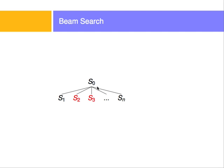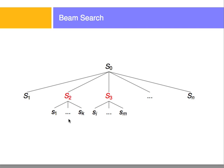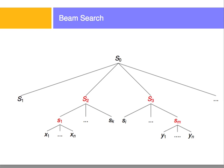It expands all the successors of the initial state and picks the ones with the best performance metric or best function. Then it expands those two states in turn. From the states that are successors of those states, it will select the best few — say the two best states — and then expands the solutions, and so on and so forth, until one of the states it expands to is the solution state.